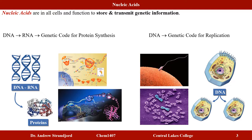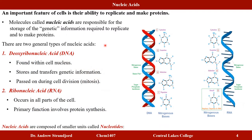There are two types of nucleic acids: DNA, which stands for deoxyribonucleic acid, and RNA, ribonucleic acid. DNA is found within the cell nucleus; it stores and transfers genetic information and is passed on during cell division via mitosis. RNA occurs in all parts of the cell — both in the nucleus and in the cytoplasm — and its primary function involves protein synthesis.